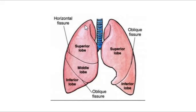Now what does each fissure separate? The horizontal fissure separates the superior lobe from the middle lobe — that's a popular exam question. The oblique fissure in the right lung separates the middle lobe from the inferior lobe. In the left lung, it's simple: the one oblique fissure separates the superior lobe from the inferior lobe.